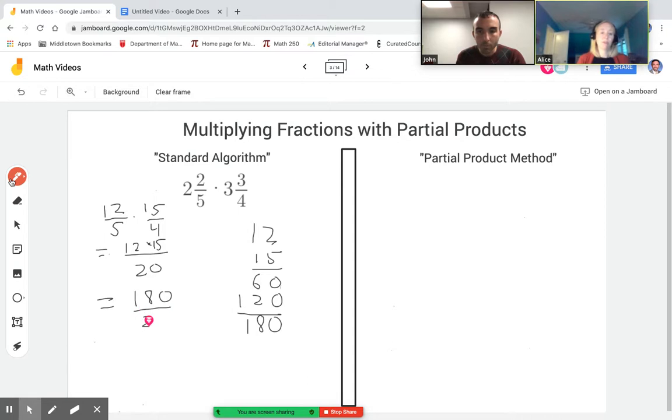And now I'm gonna reduce. So I can divide top and bottom by 10. That'll give me 18 over 2. 18 is even so 2 goes into 18 clean. So that reduces to just 9. John, what's the partial product method approach?